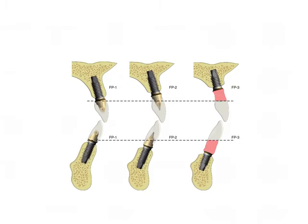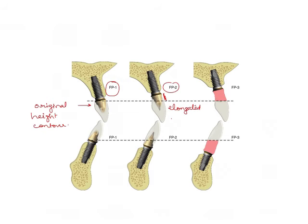In an FP1 restoration, the crown will replace the original tooth just like how the original tooth was in height and contour. In FP2, you will have a more elongated crown — the crown is hyper-contoured in the gingival area, as you can see this area is more contoured compared to the natural form. In FP3, the crown is very long — so long that it requires gingival mimicking with the help of acrylic or porcelain.